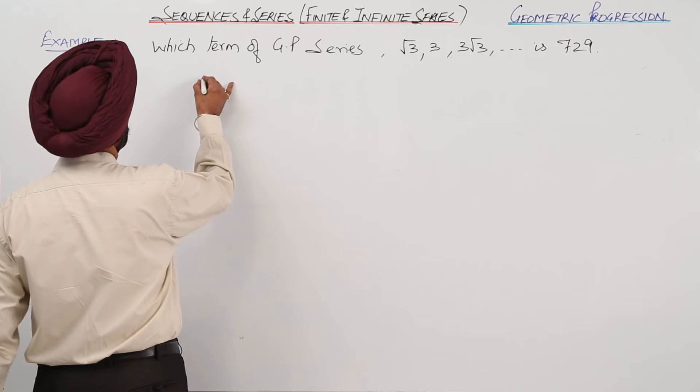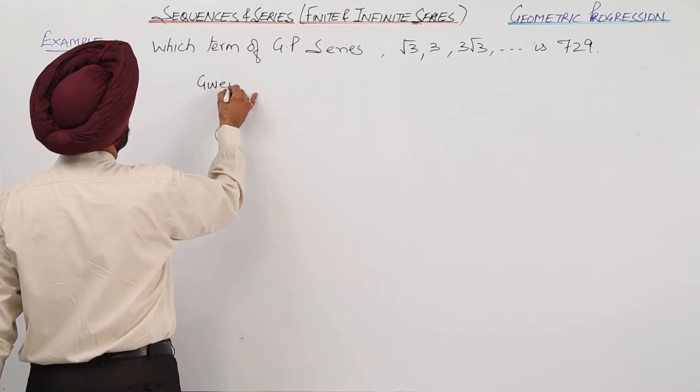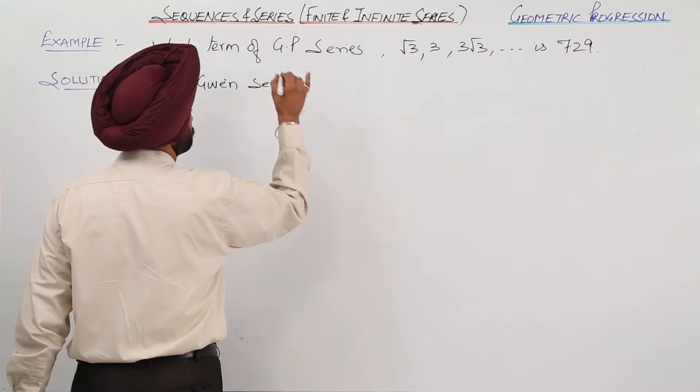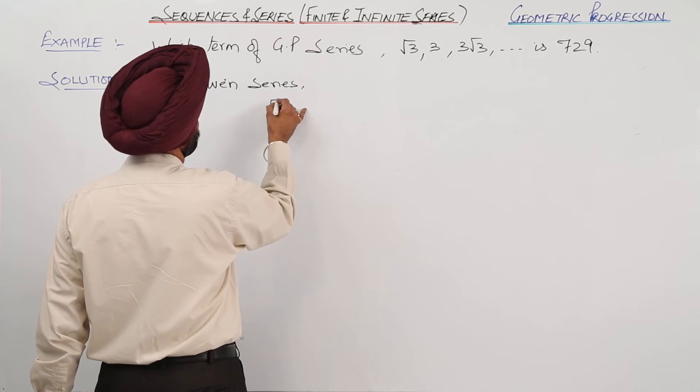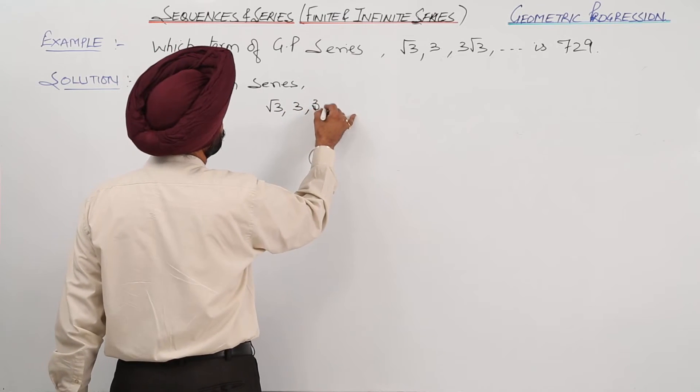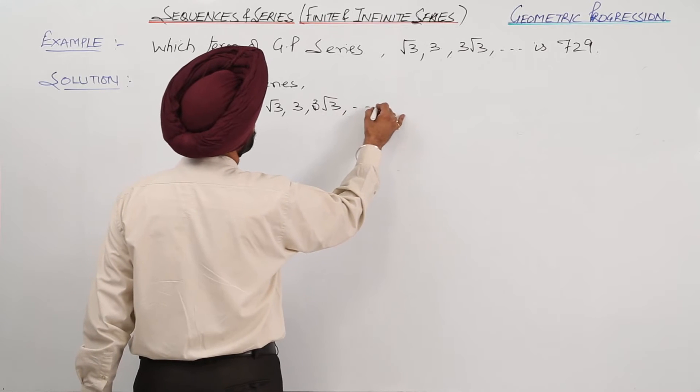The given series is root 3, then 3, 3 root 3, and so on.